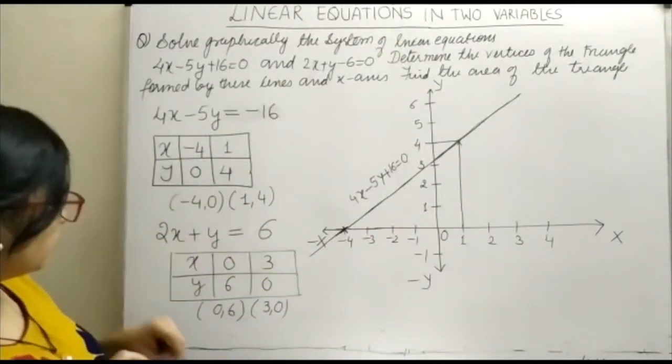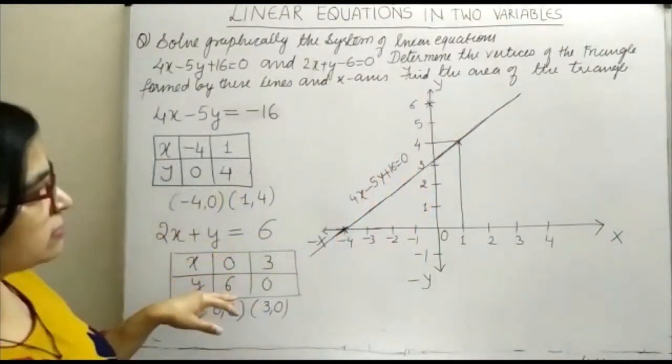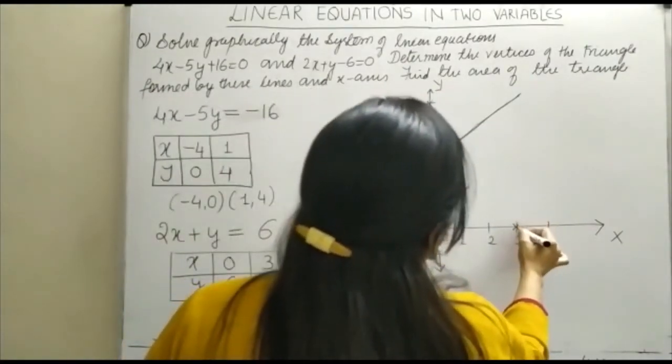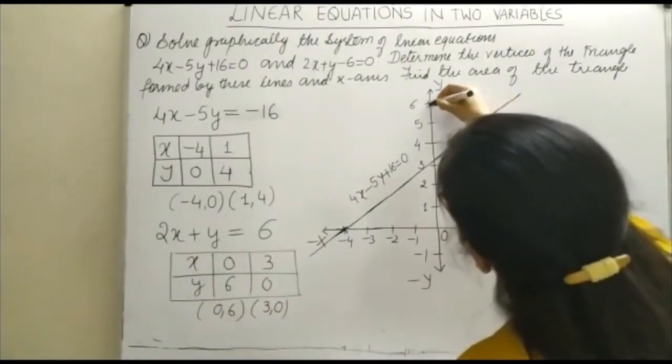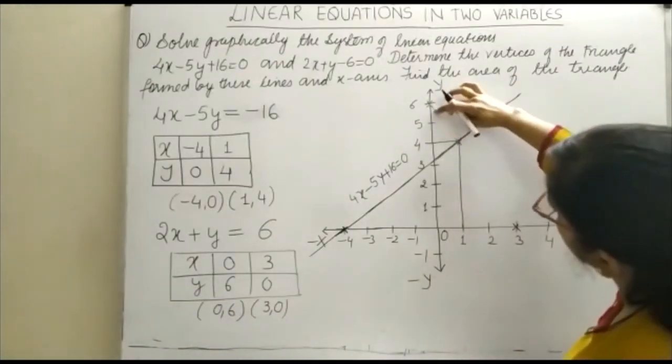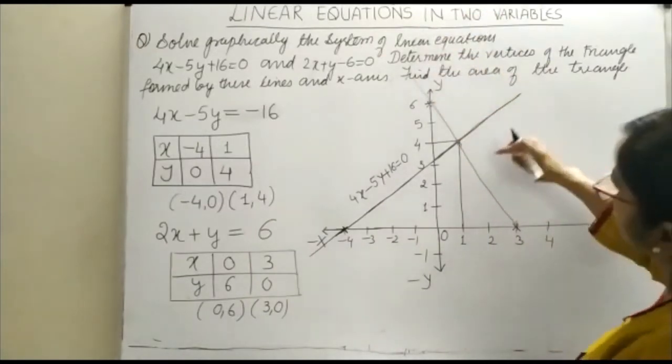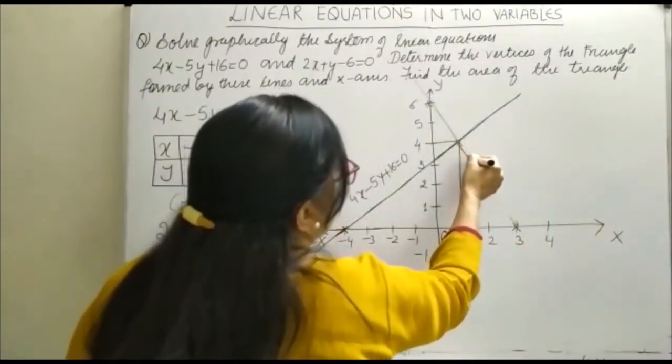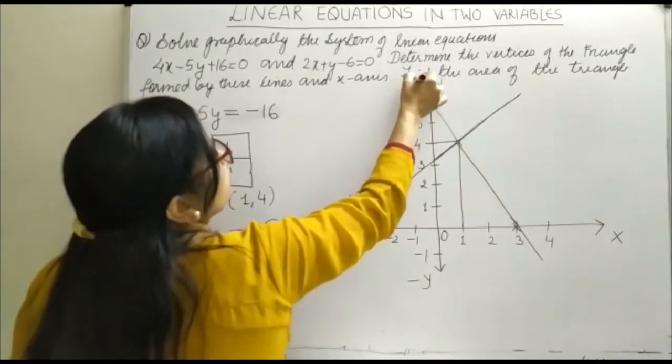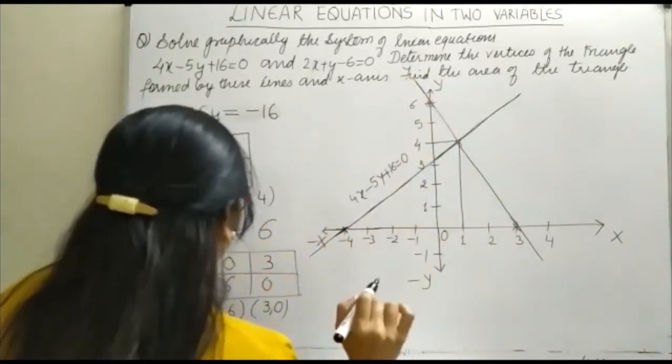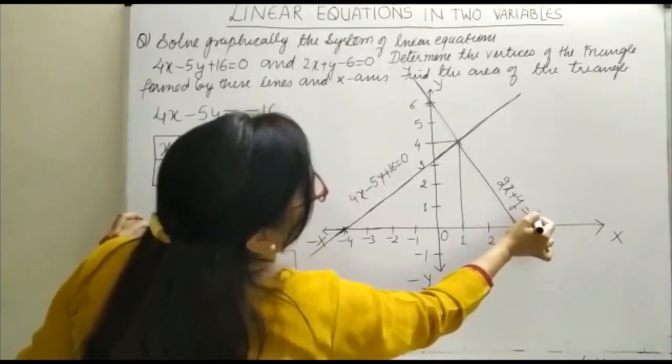Our next equation is 2x plus y equals 6. One point is 0, 6, so here is that point. The other is 3, 0, here. Now we have to join them. So 0, 6 is this point here, 3, 0 is this point, and this line is 2x plus y equals 6.